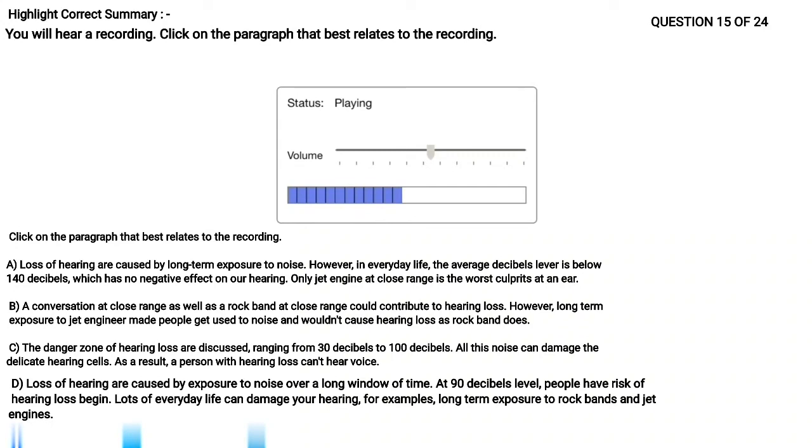Lots of everyday noises are bad for us in the long run. For example, a car horn sounds at around 100 decibels. A rock band at close range is 125 decibels. A jet engine at close range is one of the worst culprits at an ear-busting 140 decibels. The first thing to go is your high-frequency hearing, where you detect the consonant sounds in words. That's why a person with hearing loss can hear voices, but has trouble understanding what's being said.